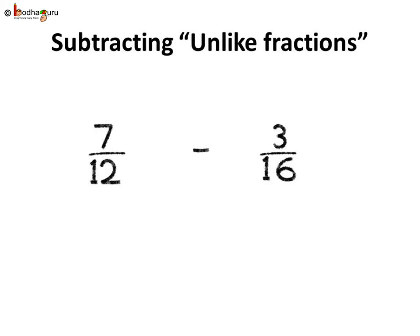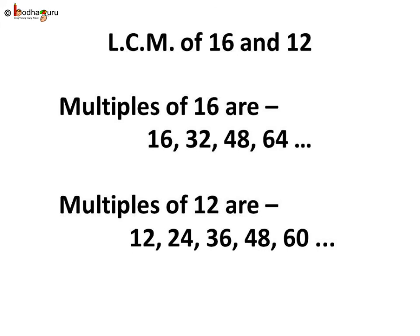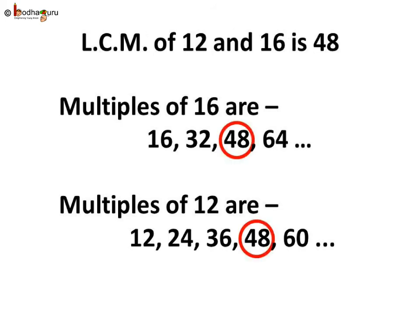We subtract 25 by 60 from 54 by 60 and the answer is 29 by 60. Now let us subtract 3 by 16 from 7 by 12. Again, the denominators are not same and the fractions are unlike fractions. Let us find the LCM of 16 and 12 to make it simpler. The multiples of 16 are 16, 32, 48, 64, etc. And the multiples of 12 are 12, 24, 36, 48, 60, etc. The least common multiple, or the LCM, of 12 and 16 is 48.